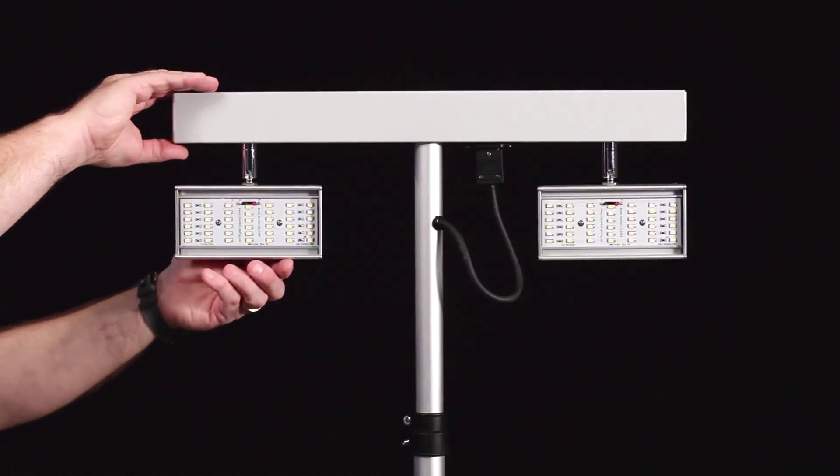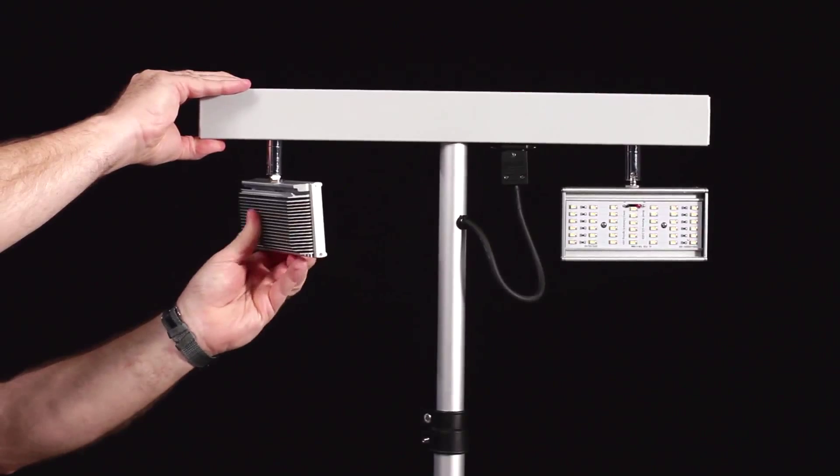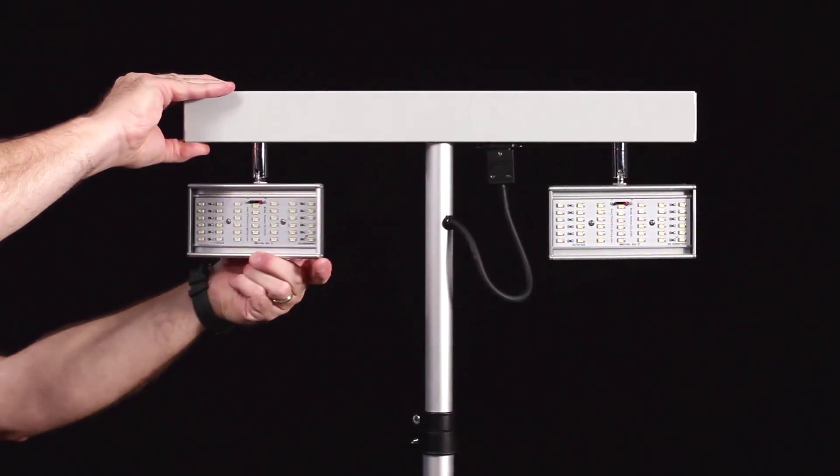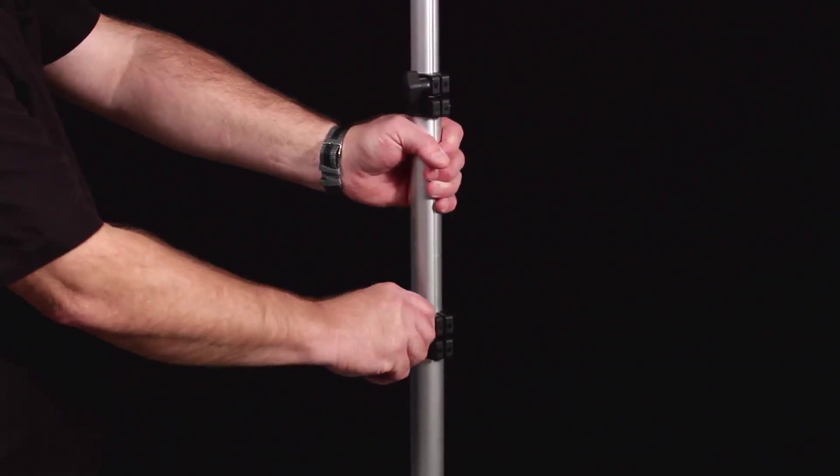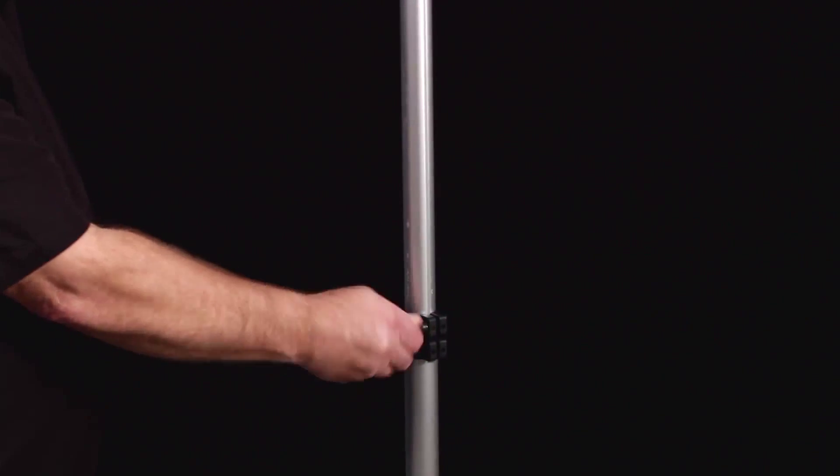Each fixture can tilt and rotate so there are infinite positioning possibilities with each light. The telescopic support pole is height adjustable from 4 feet high to 8 feet high.